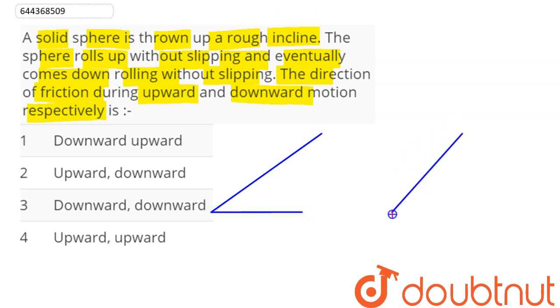So here we can see, suppose this is our rough incline plane, and there are two situations. In one situation the solid sphere is going up the incline plane, and in the other situation the solid sphere is rolling down the incline plane. And in both situations, here it is